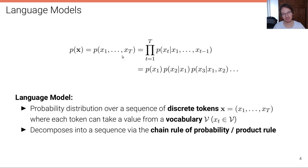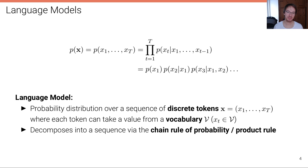We model a joint probability distribution over this sequence. So this is the sequence: the first word, the second word, and so on until the T-th word. The joint distribution over this sequence decomposes into a product of T conditional distributions, P of x_t given all of the x with index smaller than t. This is simply a consequence of the product rule, sometimes also called the chain rule of probability. We're not making any approximation here — we can simply rewrite any joint distribution in such a form.